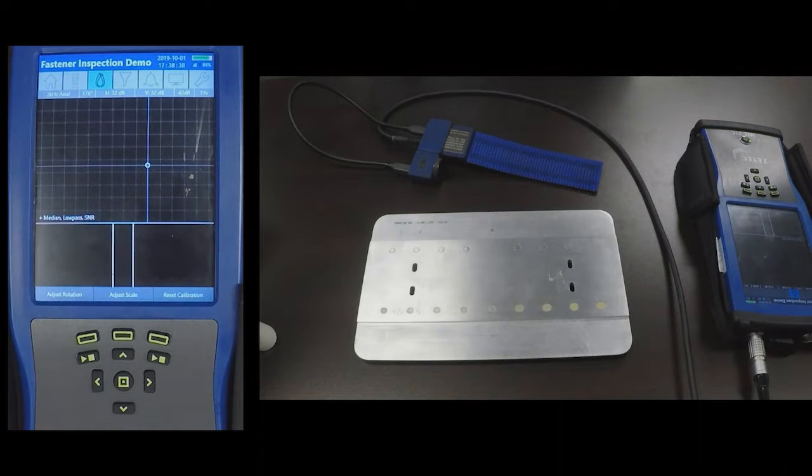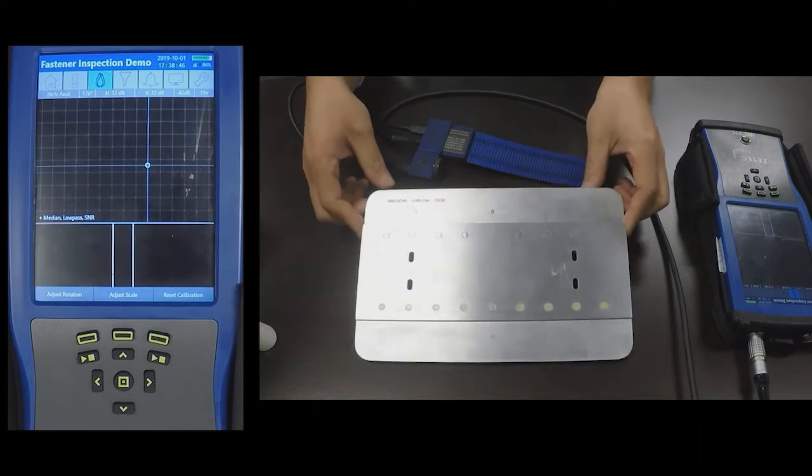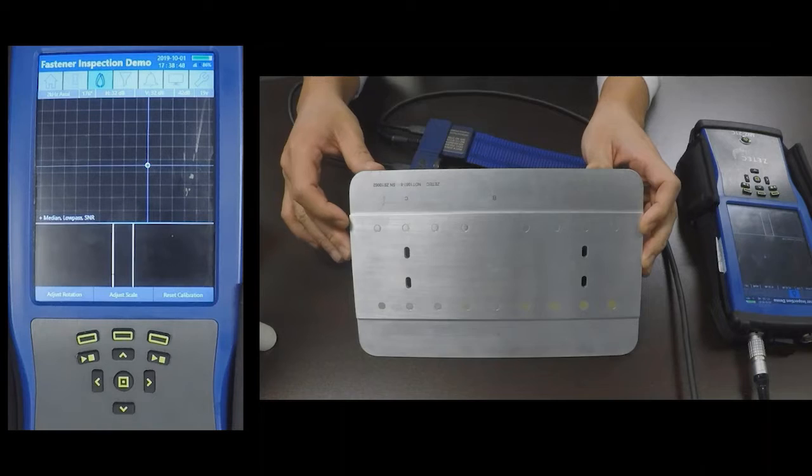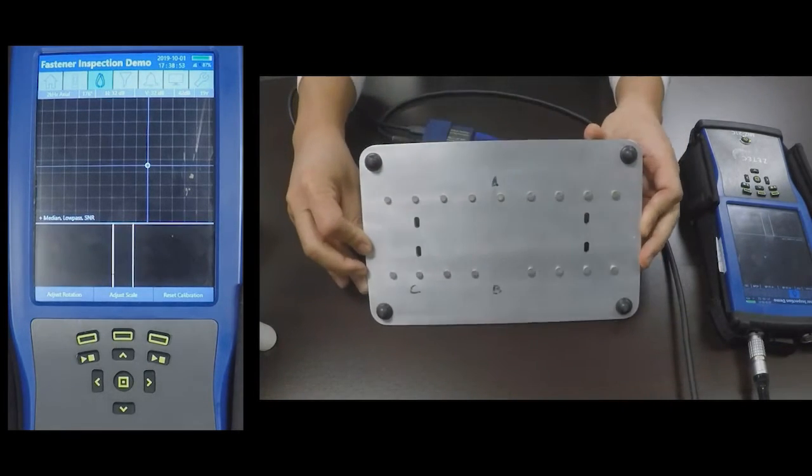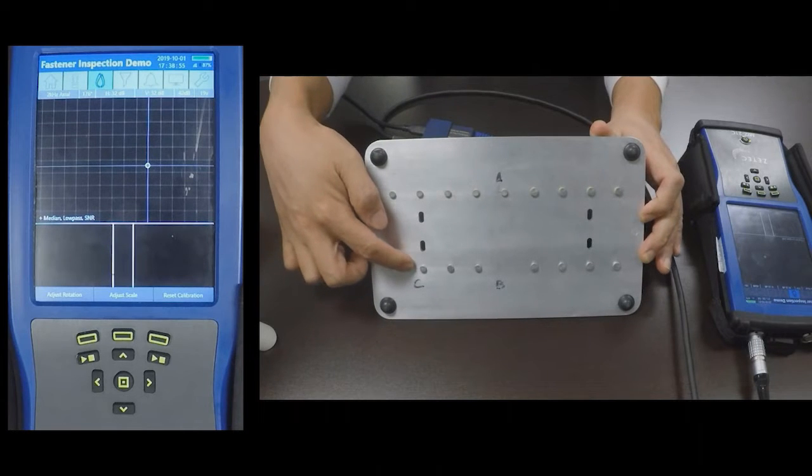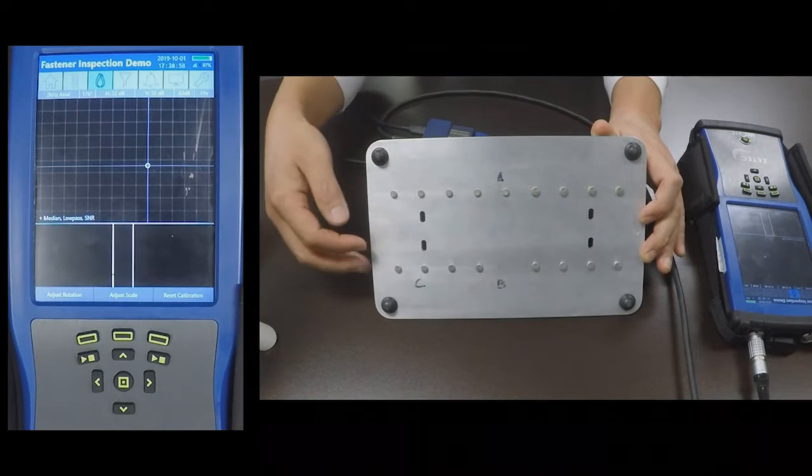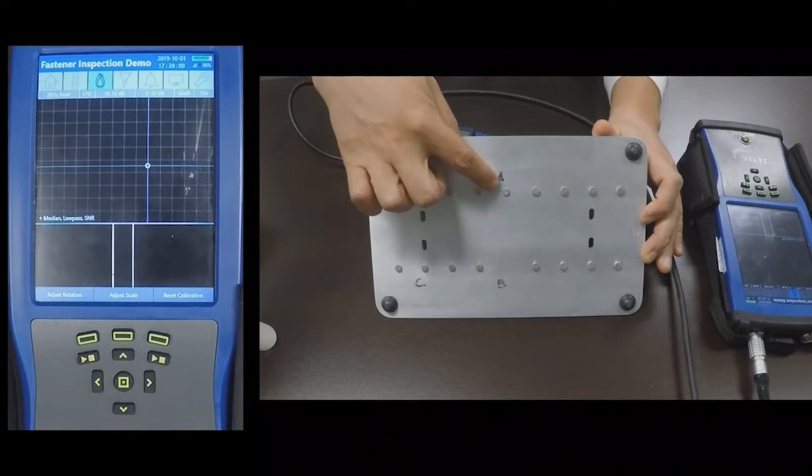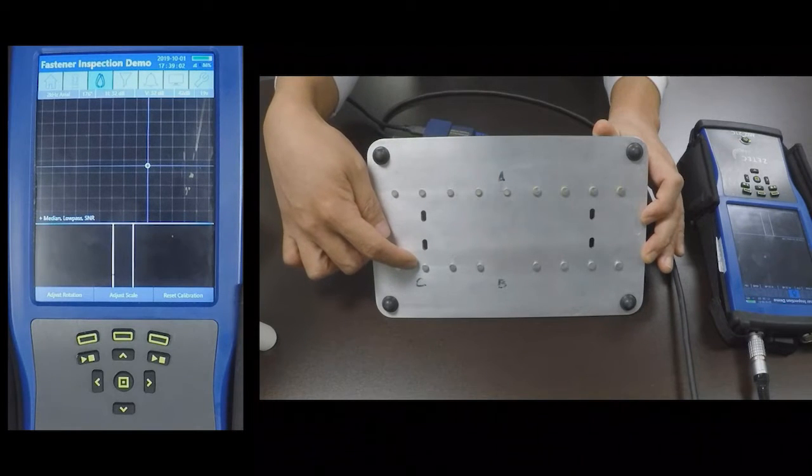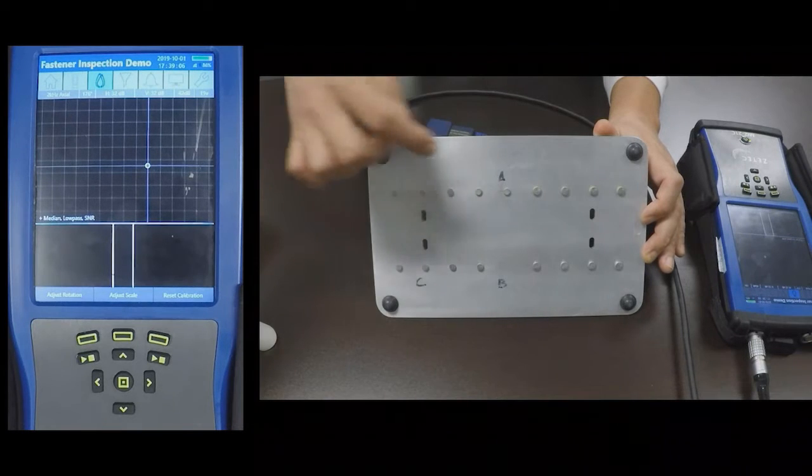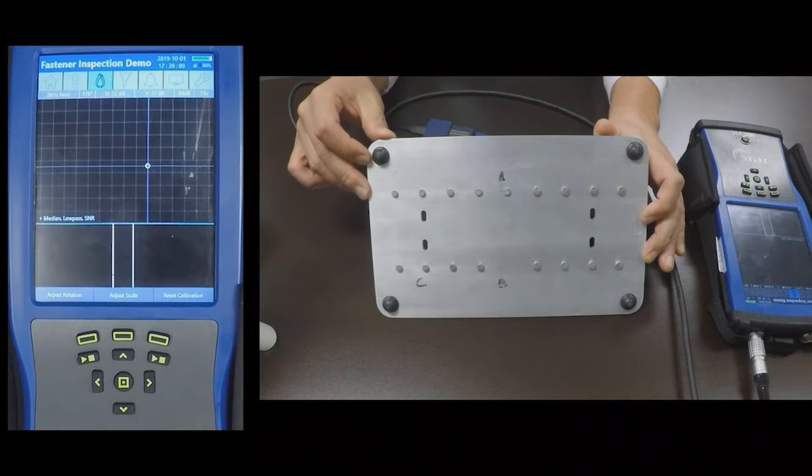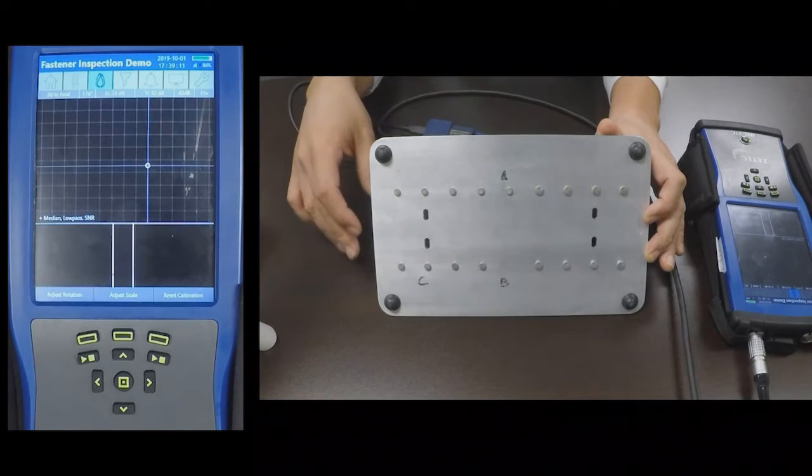Hi, this is a demonstration of a fastener inspection with subsurface cracks. Here I have an aluminum reference standard with various fasteners and there are three manufactured flaws on the bottom side, two EDM notches that are protruding from two fasteners and one EDM notch that is not associated with any fastener.